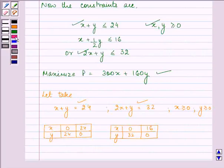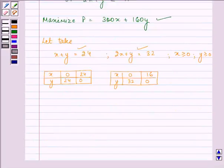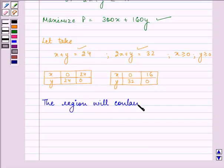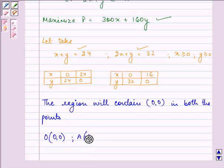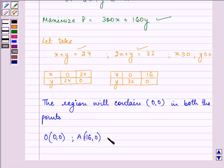So, we can write that the region will contain the point 0,0 in both the points. So, we have point O(0,0), then A, that is (16,0), then point B, that is (8,16) and point C, that is (0,24).